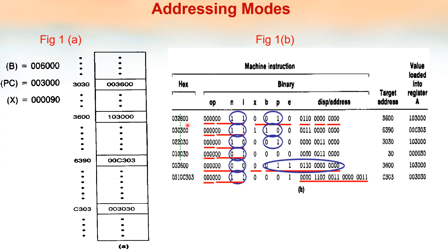In order to do this problem, the hex form instruction has to be converted into binary. Only then can we find out which addressing mode is used, by seeing the bits N, I, X, B, P, E. For converting hex to binary, each digit in the hex notation is represented by a 4-bit binary number. So the first digit 0 is represented by 0000. The next digit 3 is represented by 0011. The next digit 2 is 0010.